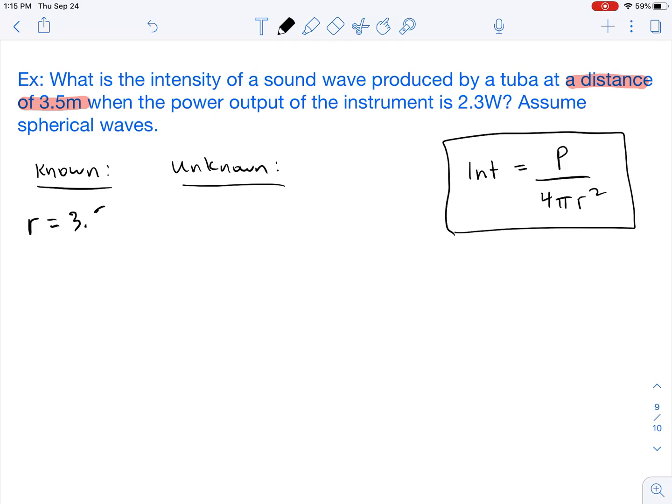And the reason why we are listing this distance as a radius is because when sound waves are produced, they kind of move in this spherical shape, which is why at the end of the problem it says assume spherical waves. So that distance is going to represent the radius from where the sound was produced.